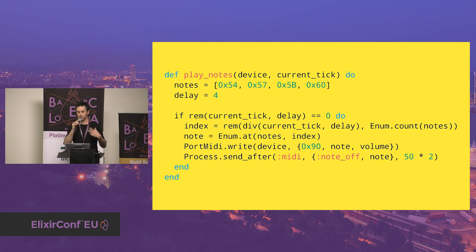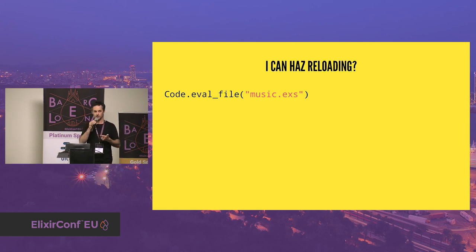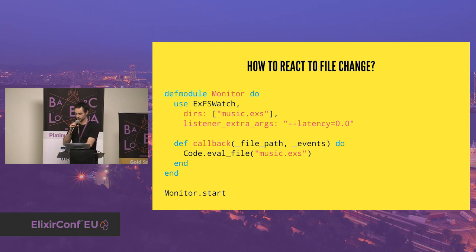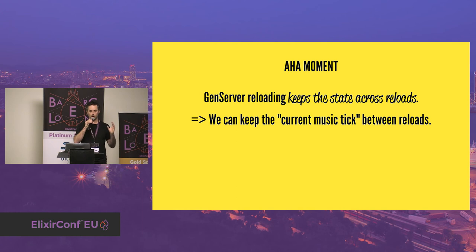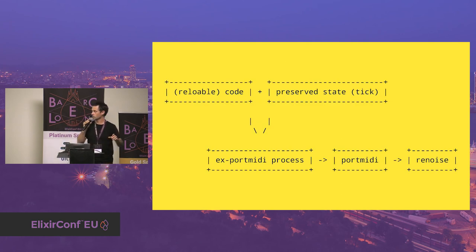In the loop you send events to the opened device and implement logic for which note to send based on the current tick. For reloading, I found Code.eval_file and re-evaluated the GenServer. I also watched the filesystem with ExFSWatch to reload the code dynamically each time the file changes. The key insight: the GenServer keeps its state across reloads when code changes, so the current music tick is preserved but the code version changes. You can edit the code generating music events and it picks up exactly where it was.